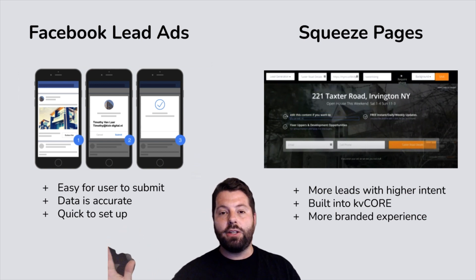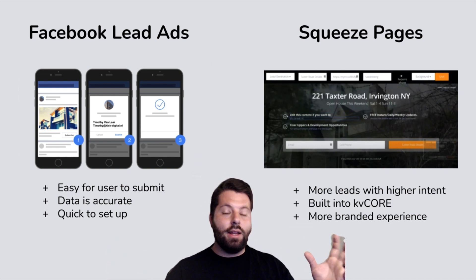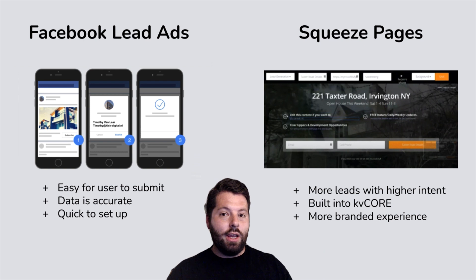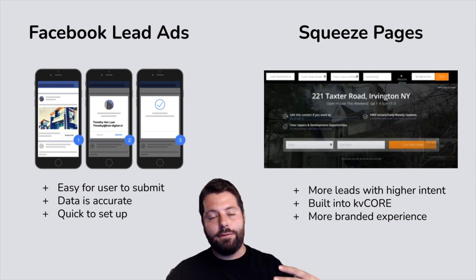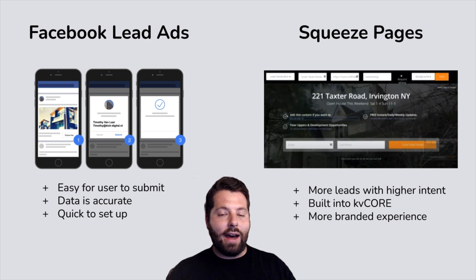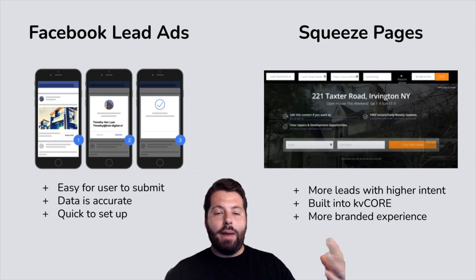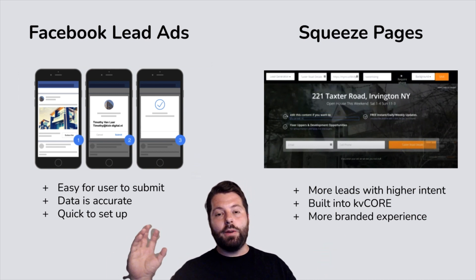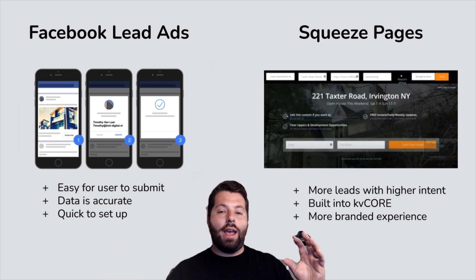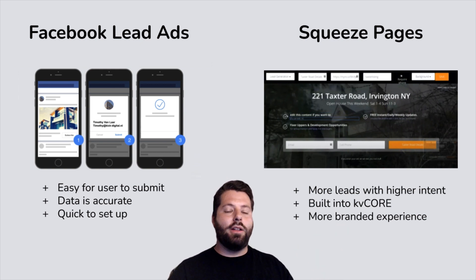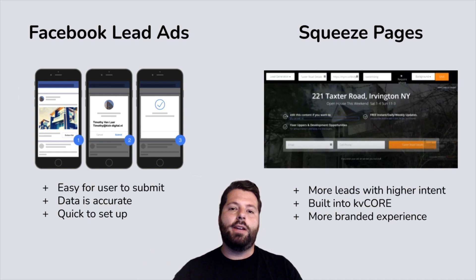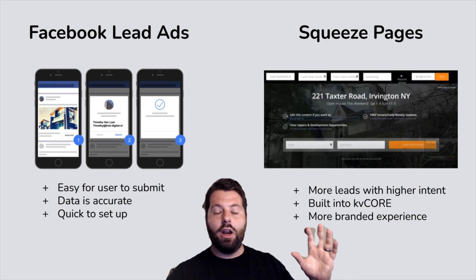Another popular strategy is the squeeze page, and you can actually build these in KV Core. Facebook lead ads are easy for users to submit — most of the time they just click the button and the information gets sent to you, meaning the data is more often accurate. With squeeze pages, if somebody lands on the page but doesn't want to give their real information, they can type whatever they want — you can get a lot of Porky Pigs or Bugs Bunnies that you pay for.